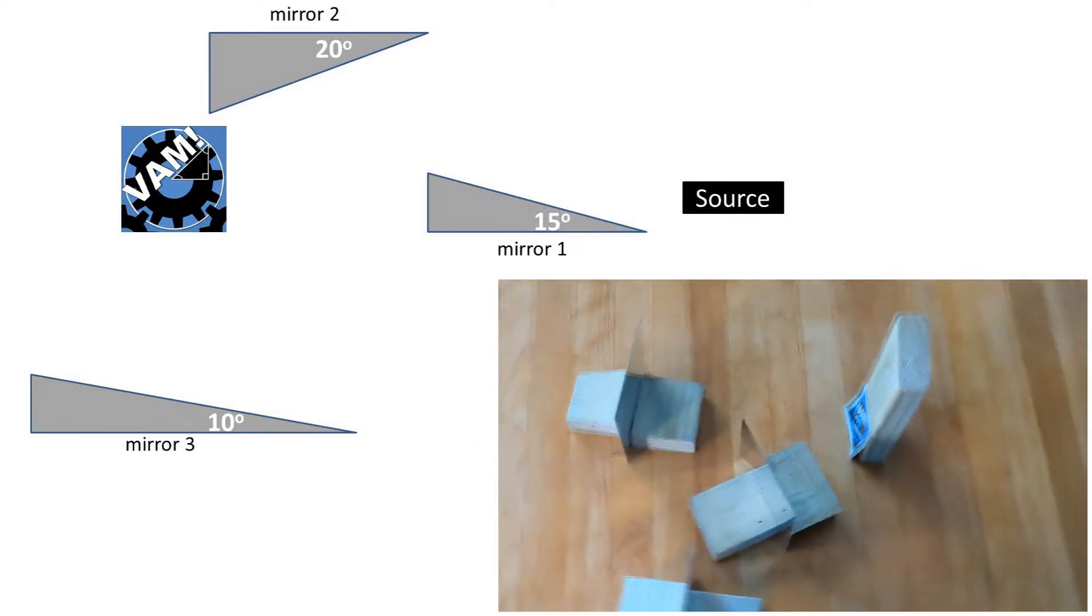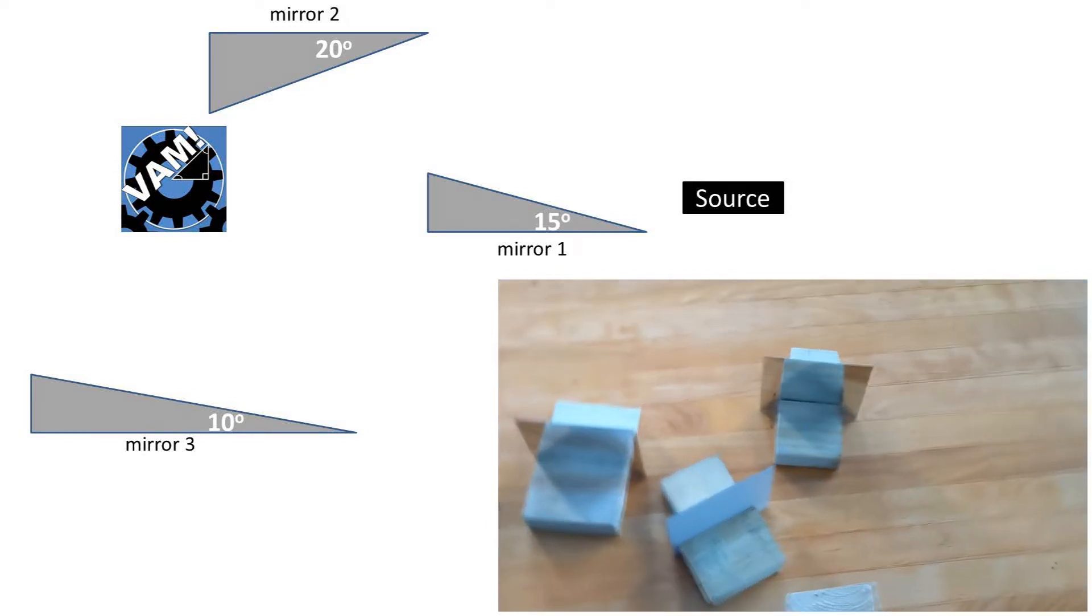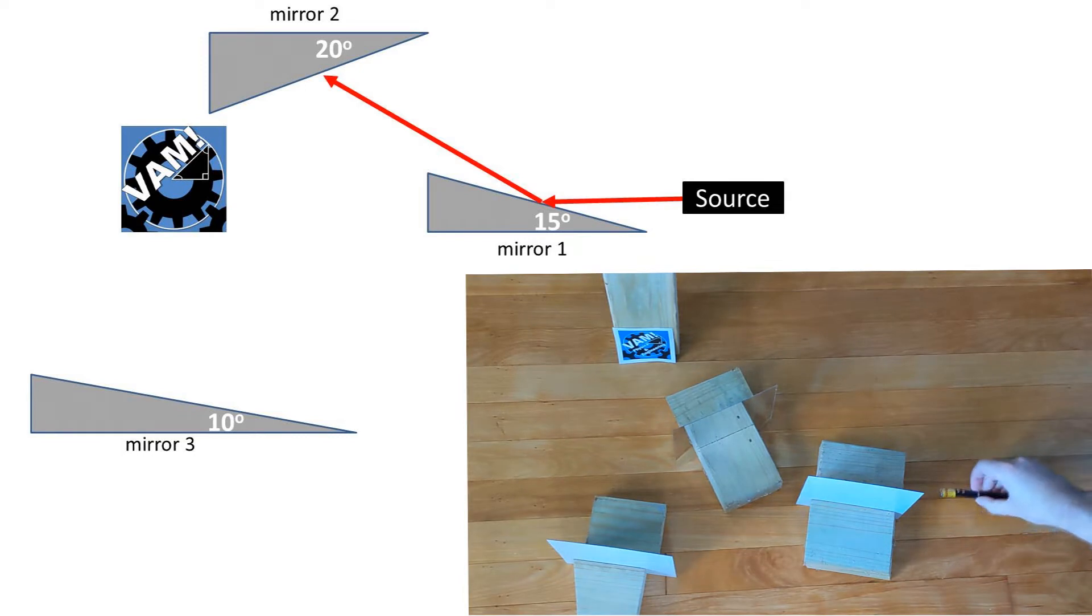In this problem, we have a configuration of mirrors at different angles. We shine a laser pointer at the first mirror, which is at a 15 degree angle from the laser pointer source.